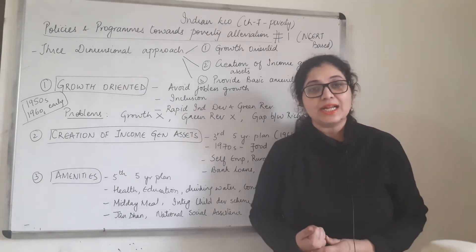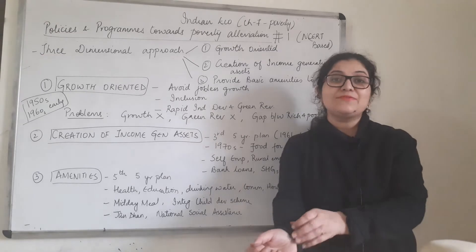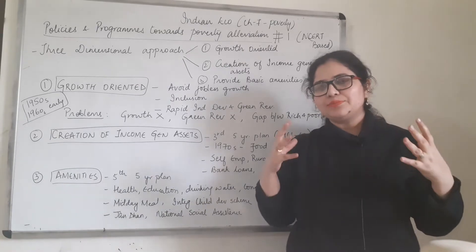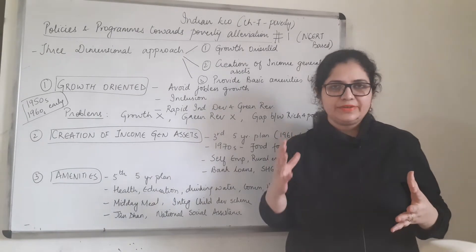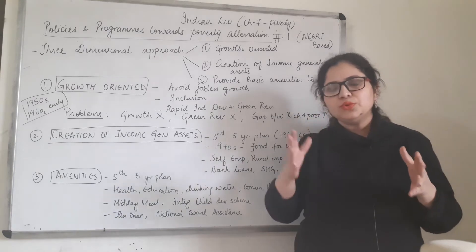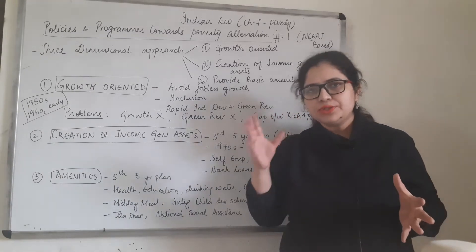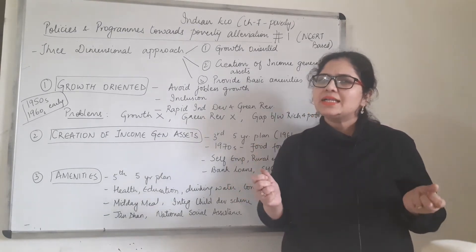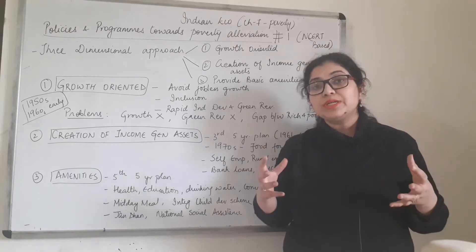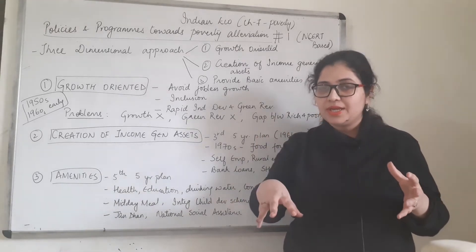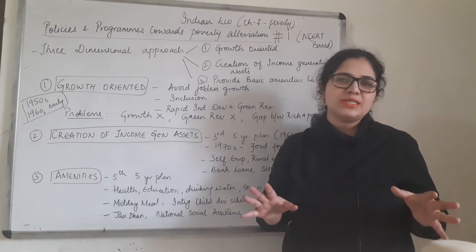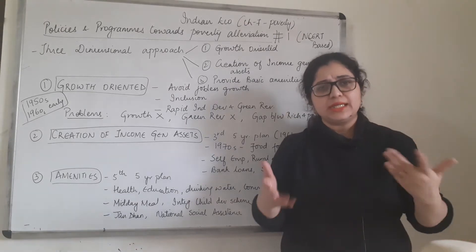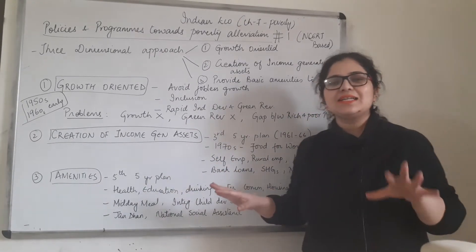Welcome everyone, you are watching Eco World Digital Classes. This is Indian Economy Series for Standard 12th and we are doing Chapter 7 — Poverty. Today we will study policies and programs aimed at poverty alleviation. I follow two books for my videos: NCERT and TRJN. This topic is a little detailed in TRJN and a little crisp in NCERT, so I am going to do two videos on just this topic to cover all possible points. Today's video is clearly NCERT-based.